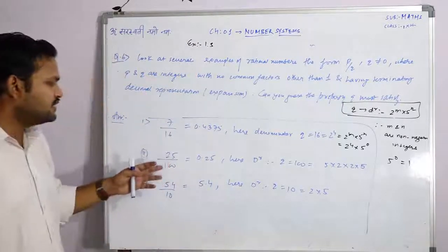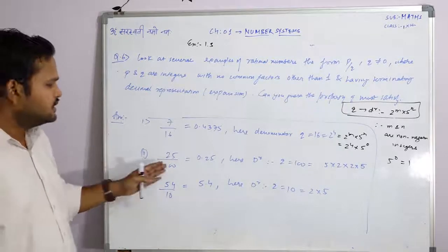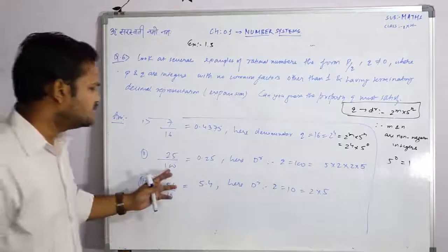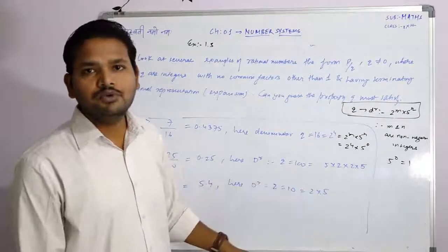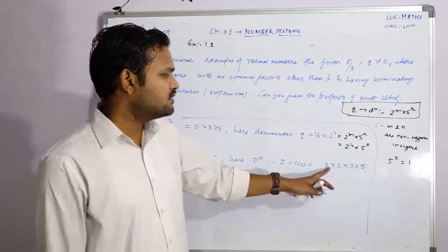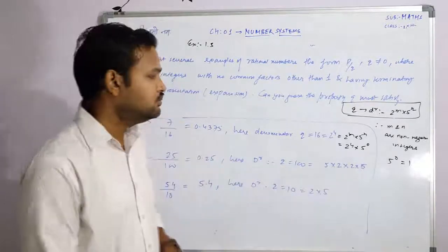Let's take another example of 25 by 100. If you know that it is 0.25 by 100, because it is 100 decimal. The denominator is q. It can be 2 raised to m into 5 raised to m. How can we make 100 factors? 5 into 2 into 2 into 5.